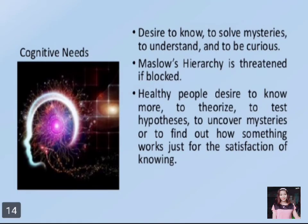The second category is cognitive needs, which is the desire to know, to solve mysteries, to understand, and to be curious. Maslow's hierarchy is threatened if these are blocked. Healthy people desire to know more, to theorize, to test hypotheses, and to uncover mysteries or find out how something works just for the satisfaction of knowing. Maslow believed that humans have the need to increase their intelligence and thereby chase knowledge. Cognitive needs are the expression of the natural human need to learn, explore, discover, and create to get a better understanding of the world. When not fulfilled, this leads to confusion and identity crisis, and it is directly related to the need to explore, or openness to experience.